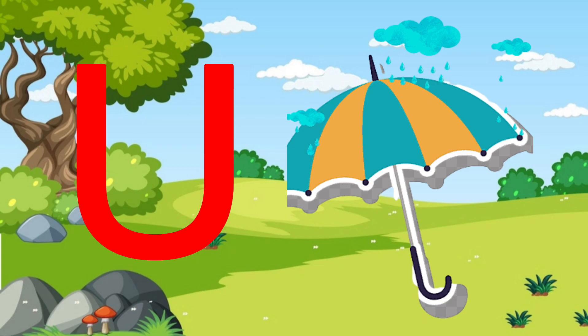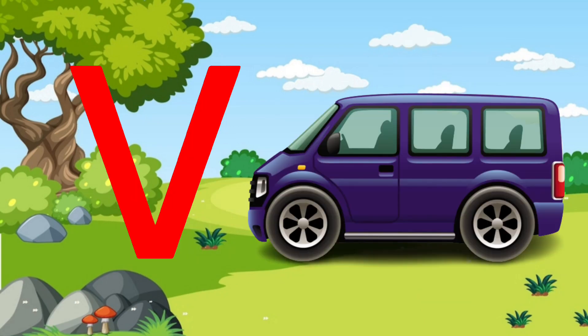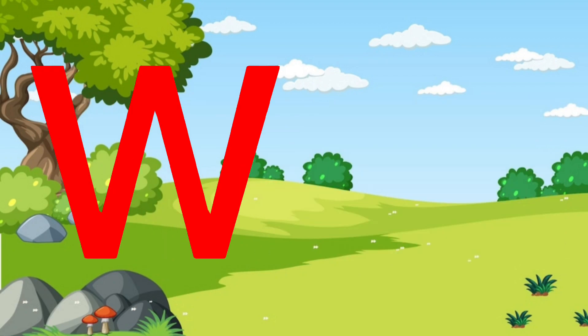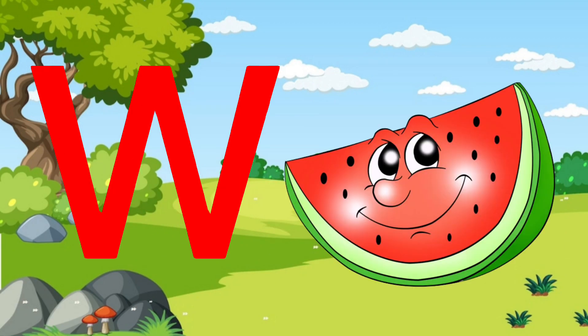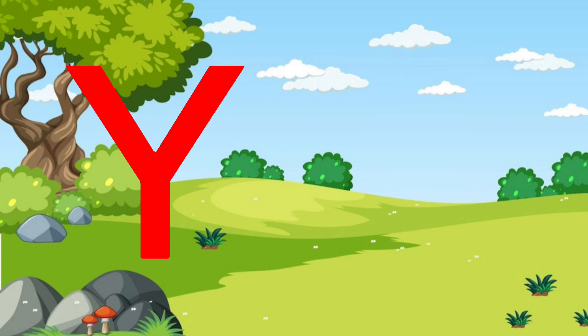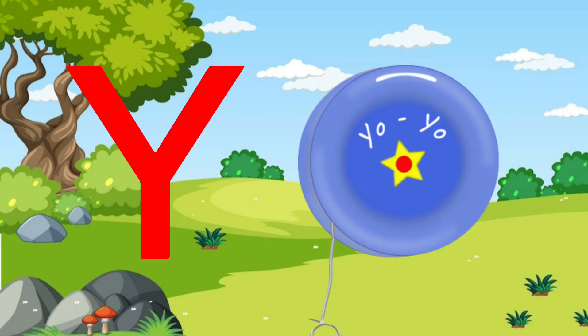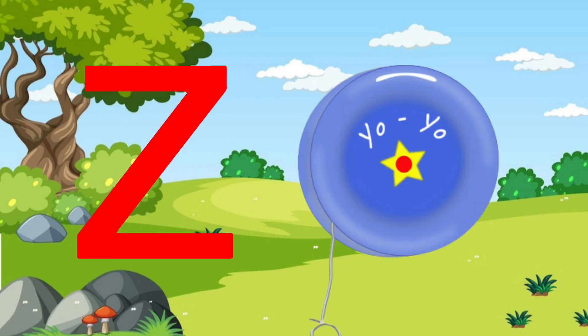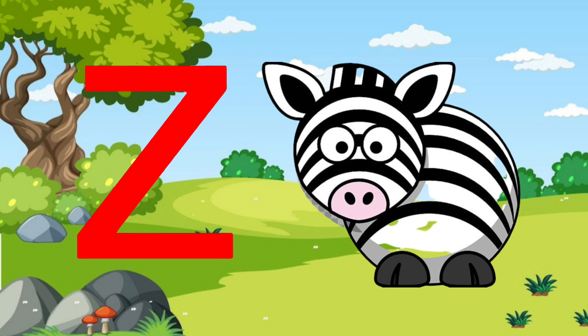U for umbrella, V for van, W for water balloon, X for x-ray, Y for yo-yo, Z for zebra.